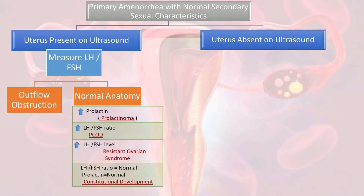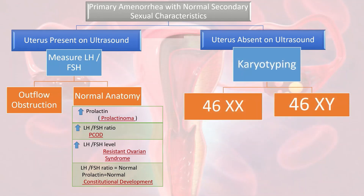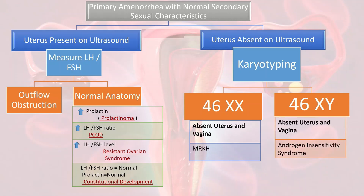In patients where the uterus is absent on ultrasound, karyotype 46XX with absent uterus and vagina indicates MRKH syndrome. If the karyotype is 46XY with absent uterus and vagina, that indicates androgen insensitivity syndrome.